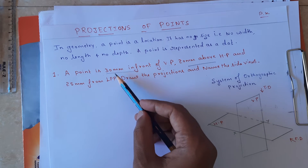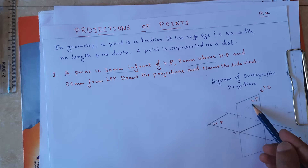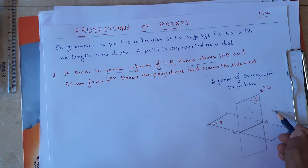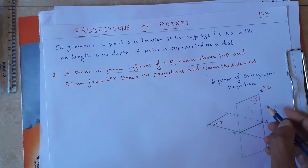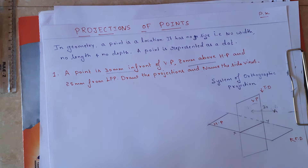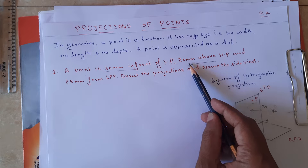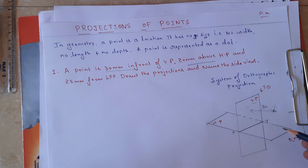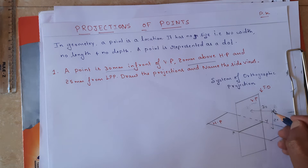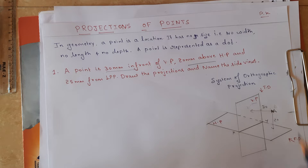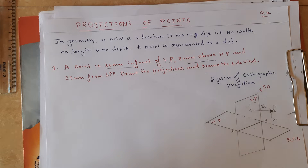Point A is 30 mm in front of VP — this is the vertical plane, and from this vertical plane point A is at a distance of 30 mm. The same point is 20 mm above HP, so from HP it is at a distance of 20 mm. So we have a point here — point A is 30 mm in front of VP and 20 mm above HP, as I told in the previous class.